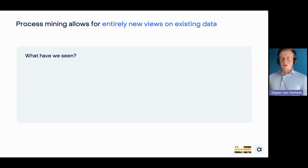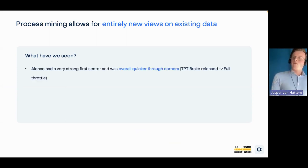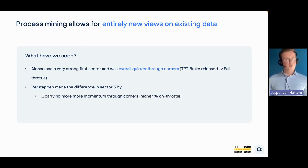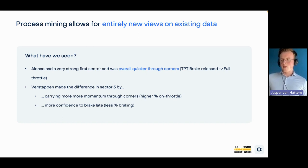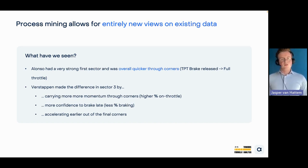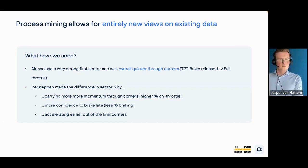Let me summarize what we've just seen. Alonso had a very strong first sector and was overall quicker through corners — that's the throughput time analysis. But Verstappen made the difference in sector three by carrying more momentum through corners: more confidence on throttle, braking later, spending less percentage of time on the brake, and accelerating much earlier out of the final two corners to gain that extra edge over Alonso. That's in a nutshell what you've seen through data — quite the journey from 'what is process mining' to getting insights applied to a real F1 qualifying session.